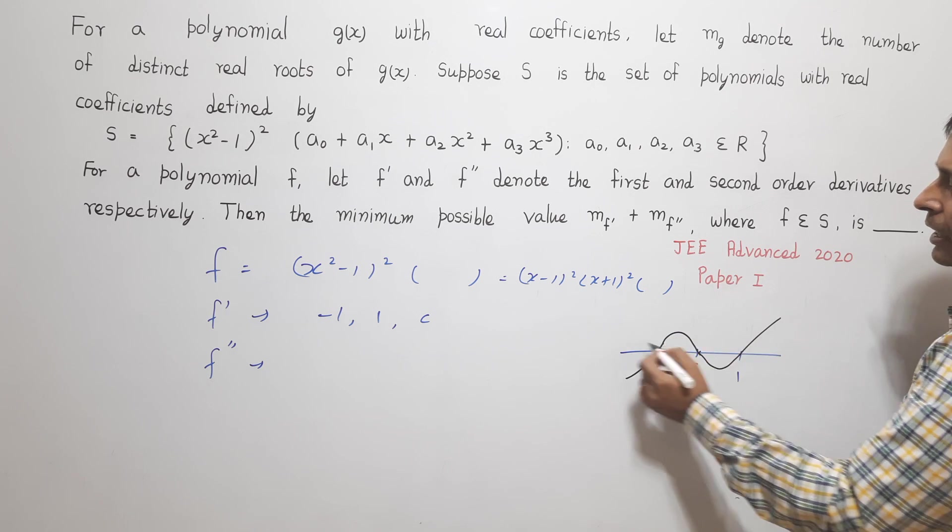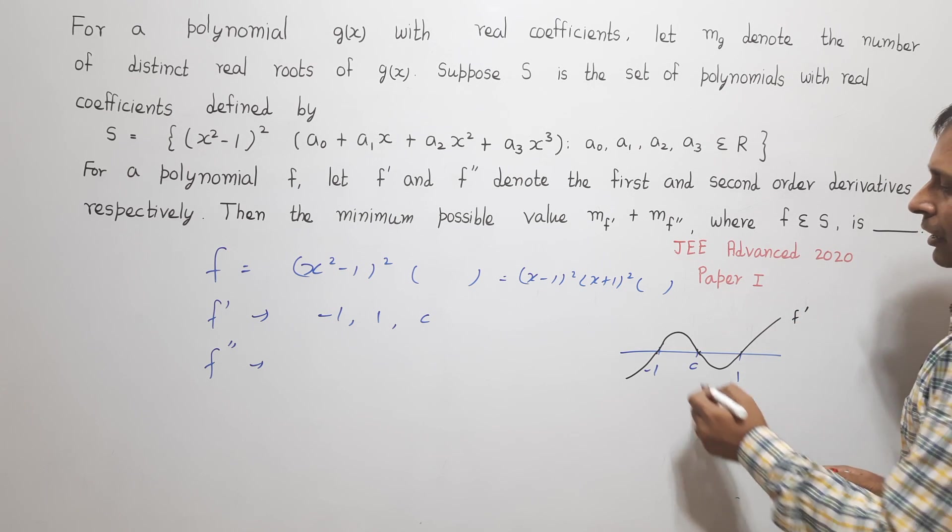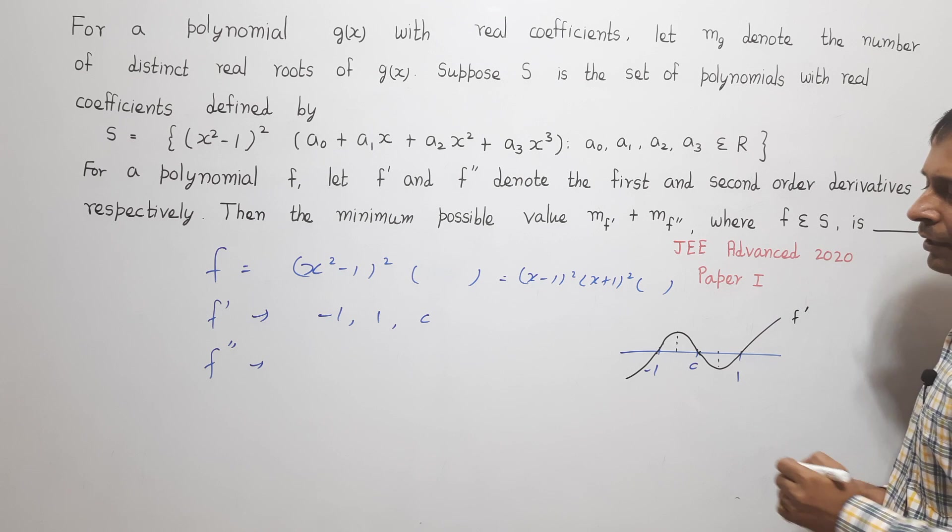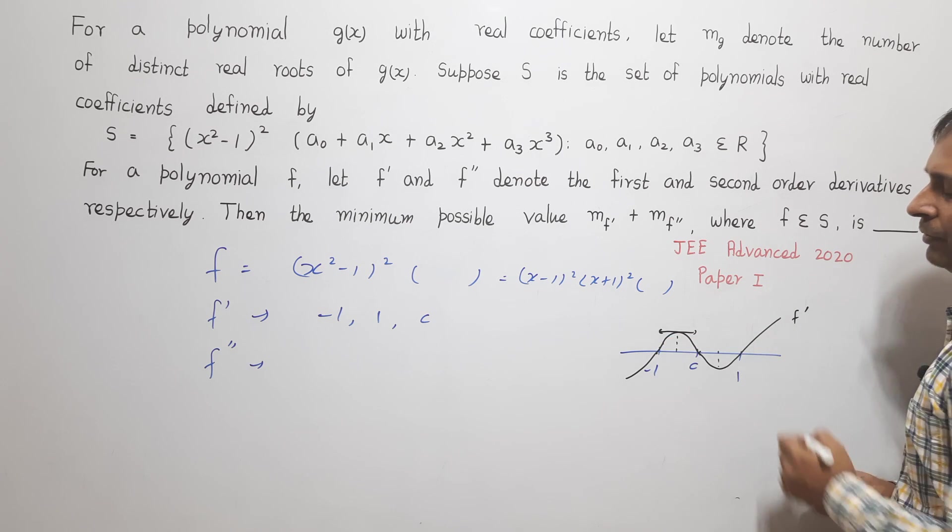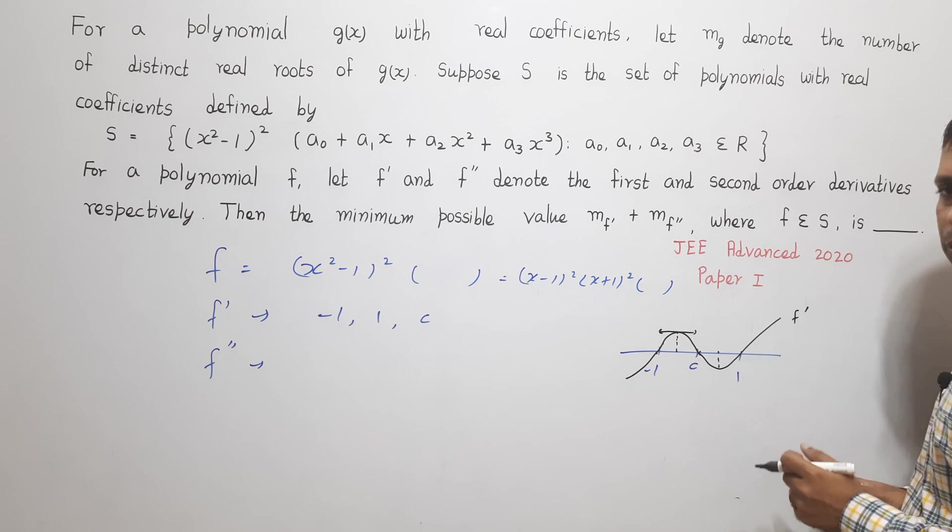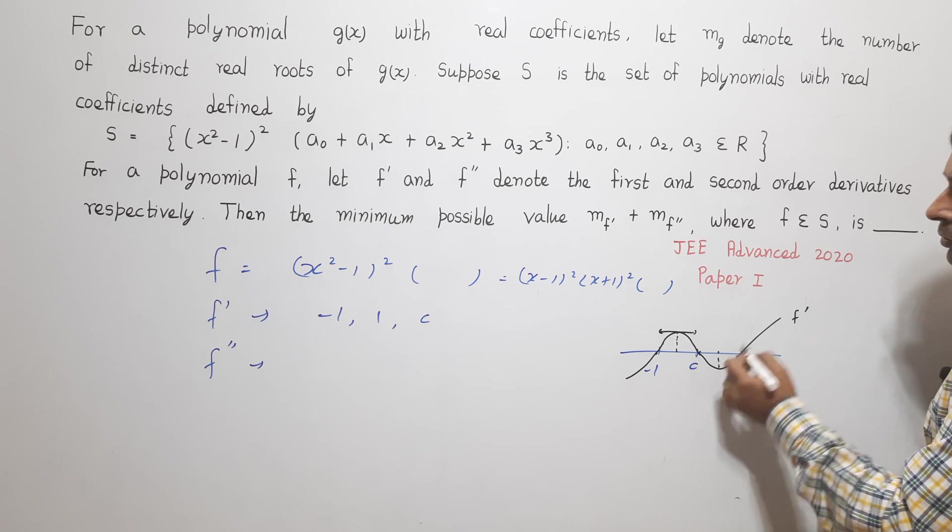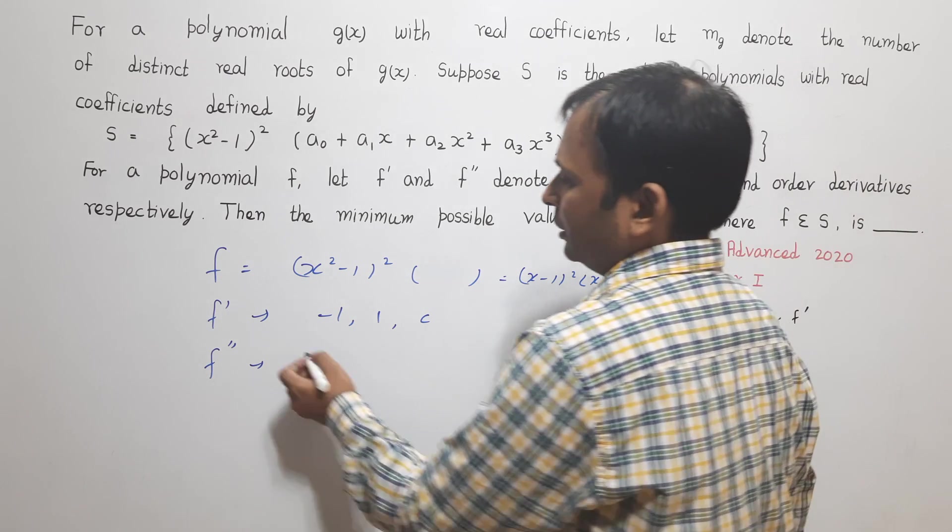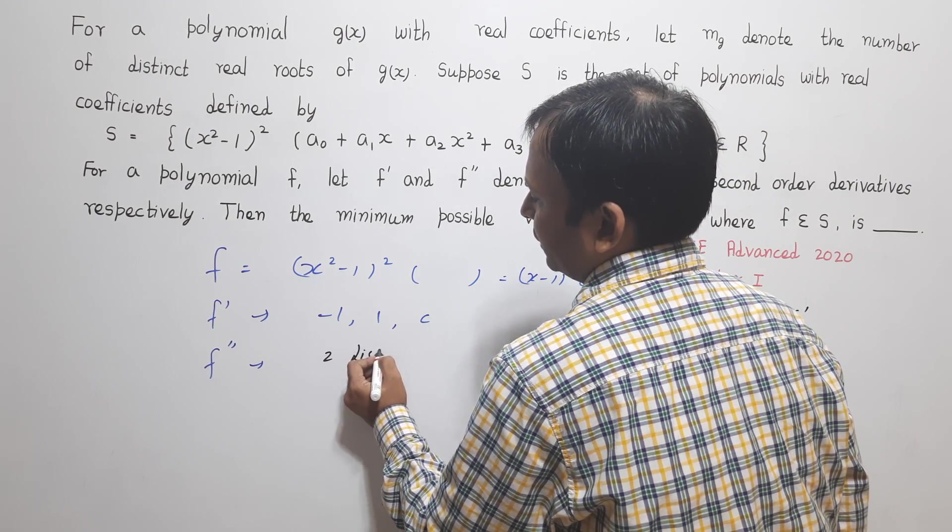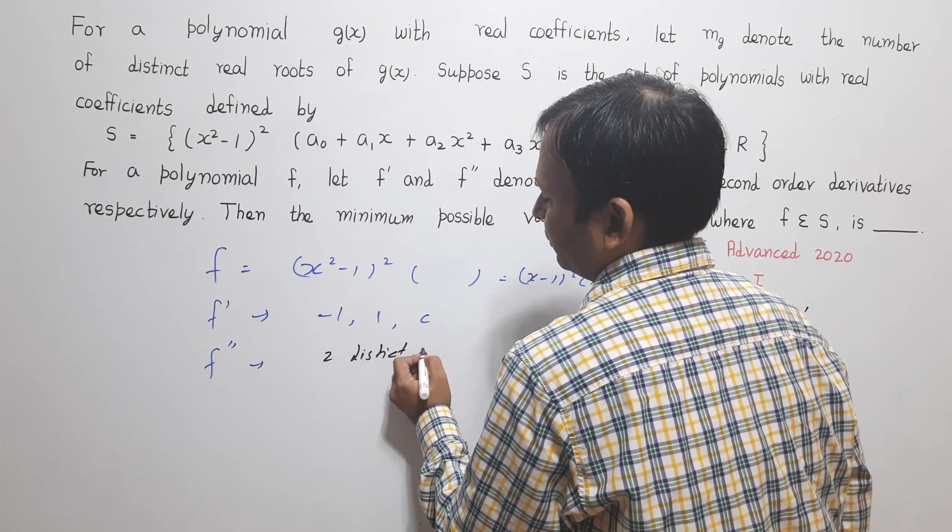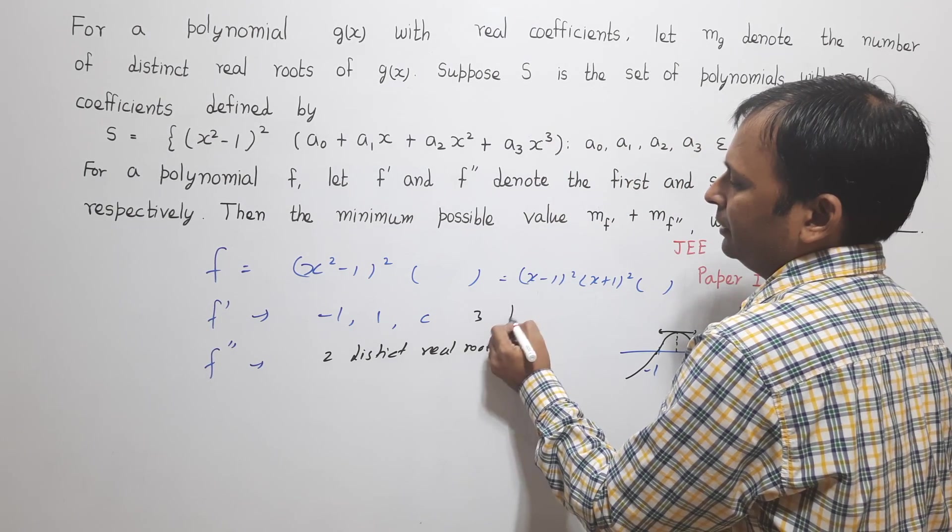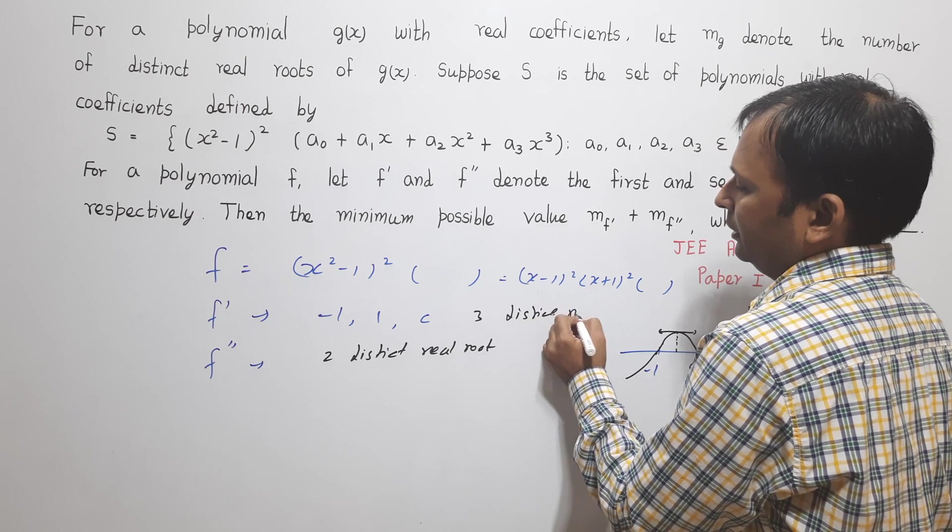Now if this is the graph of f', here you can clearly see it will have 1 maxima and 1 minima. That means here where the slope of the tangent is 0, here there will be at least 1 root here and 1 root here. That means there will be 2 roots, 1 root between -1 and C and 1 root is between C and 1. So this f'' has compulsorily 2 distinct real roots and f' has compulsorily 3 distinct real roots.